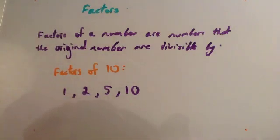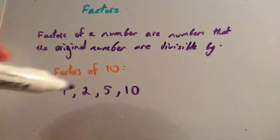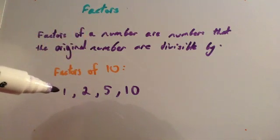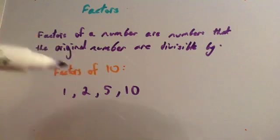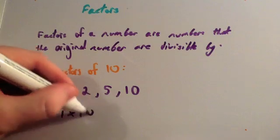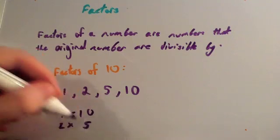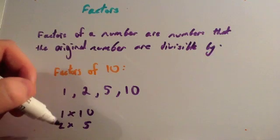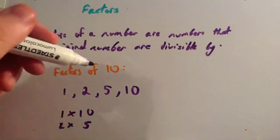Another way of looking at it is to think of what numbers can be multiplied together to give you 10. So for instance, 10 is 1 times 10 and it's 2 times 5, so 1 and 10, 2 and 5 are going to be factors of 10.